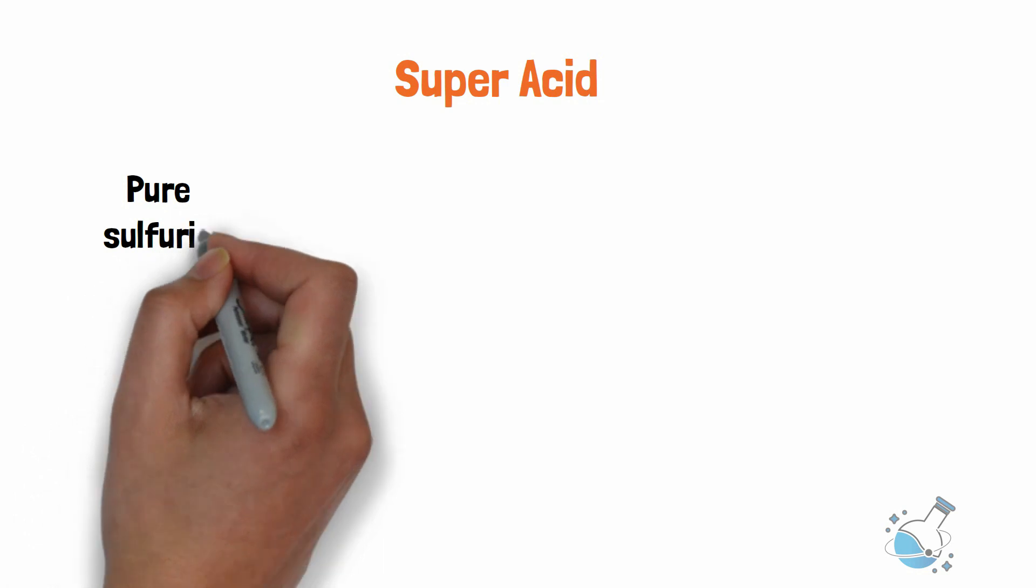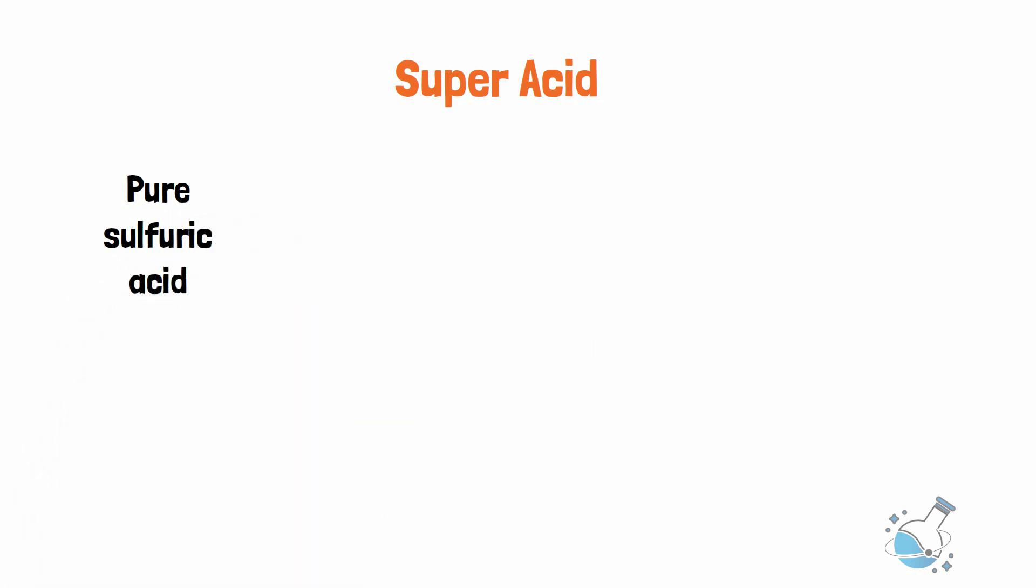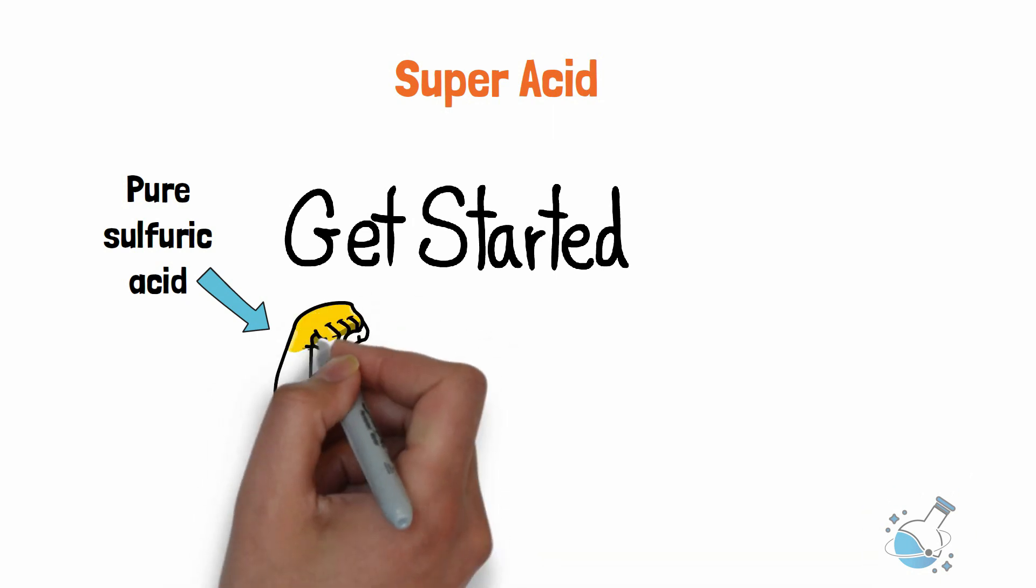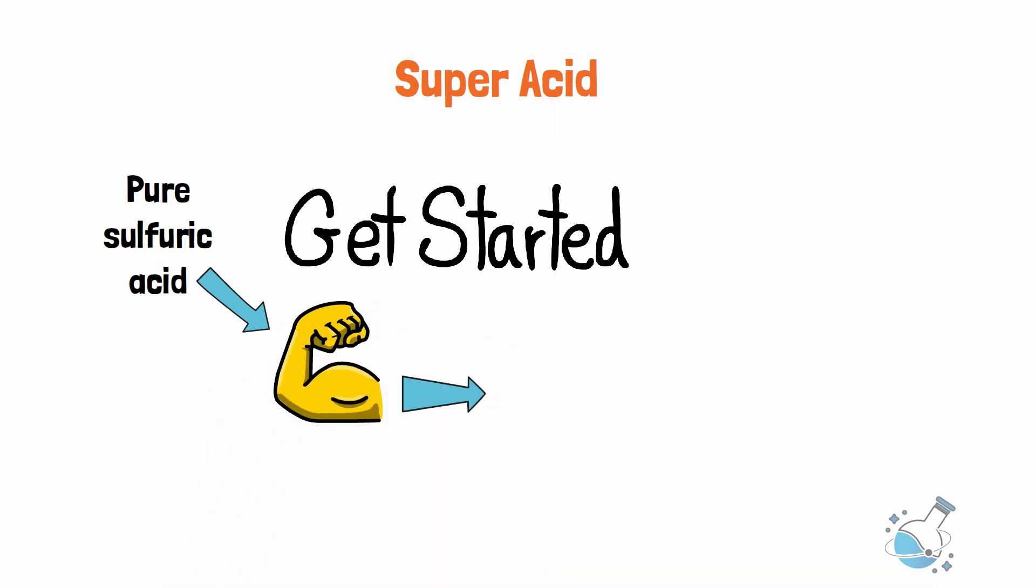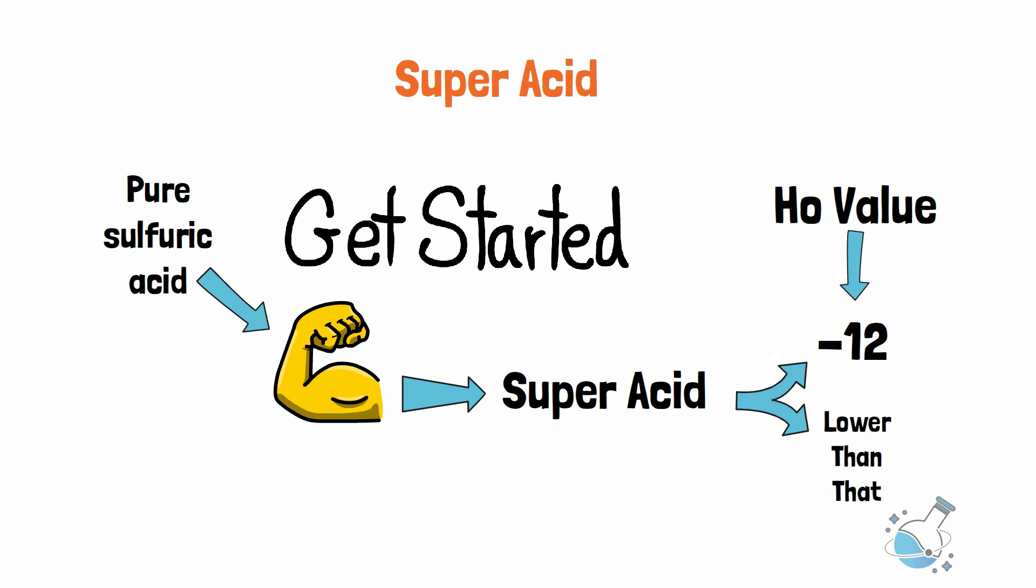Pure sulfuric acid is the strongest acid found in nature. But this is just the beginning for superacids. Any acid that is stronger than pure sulfuric acid is called a superacid. The H0 value of pure sulfuric acid is minus 12. So, any acid with a lower H0 value is a superacid.